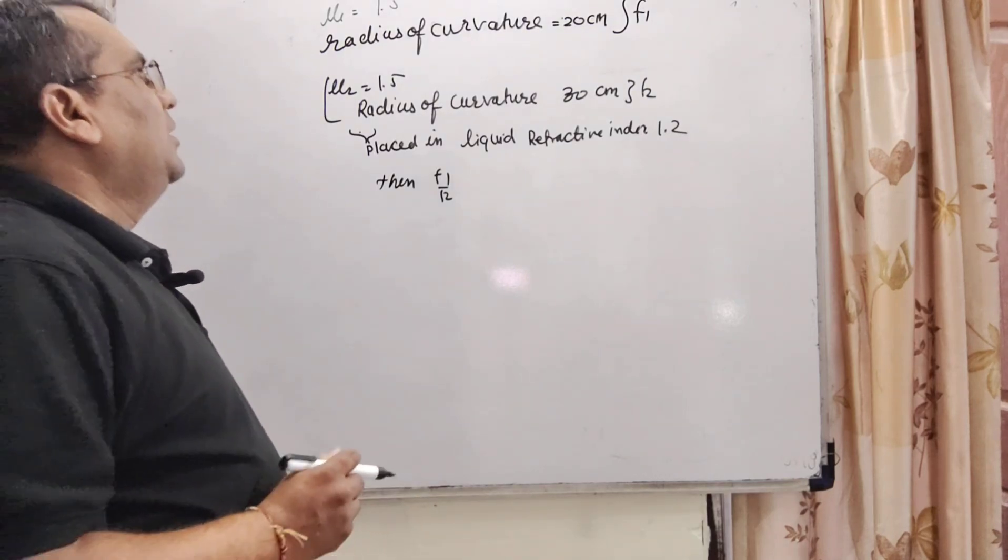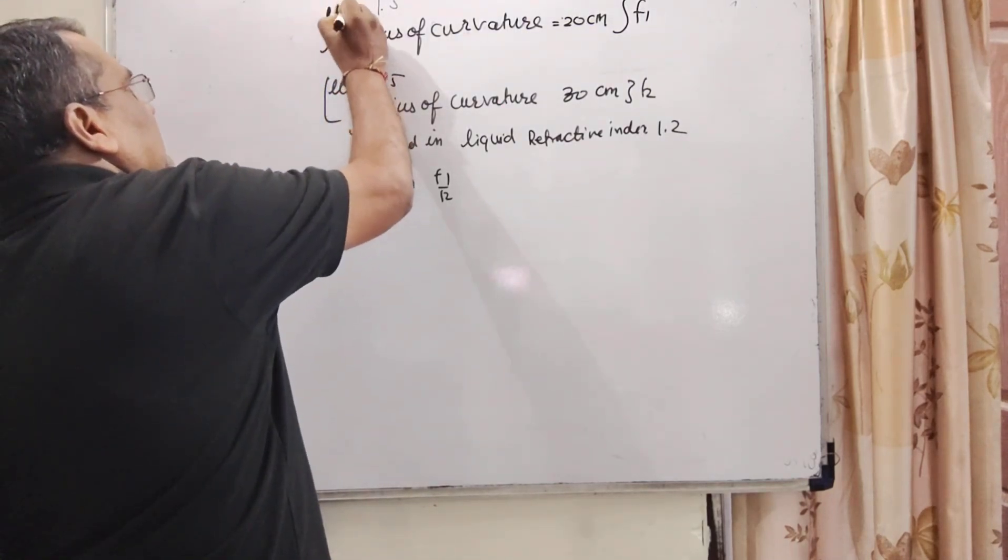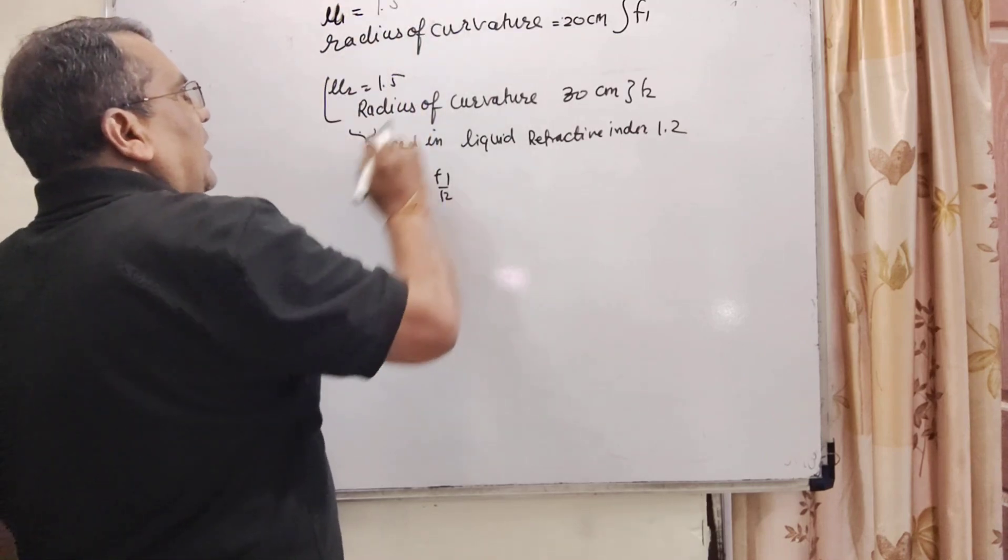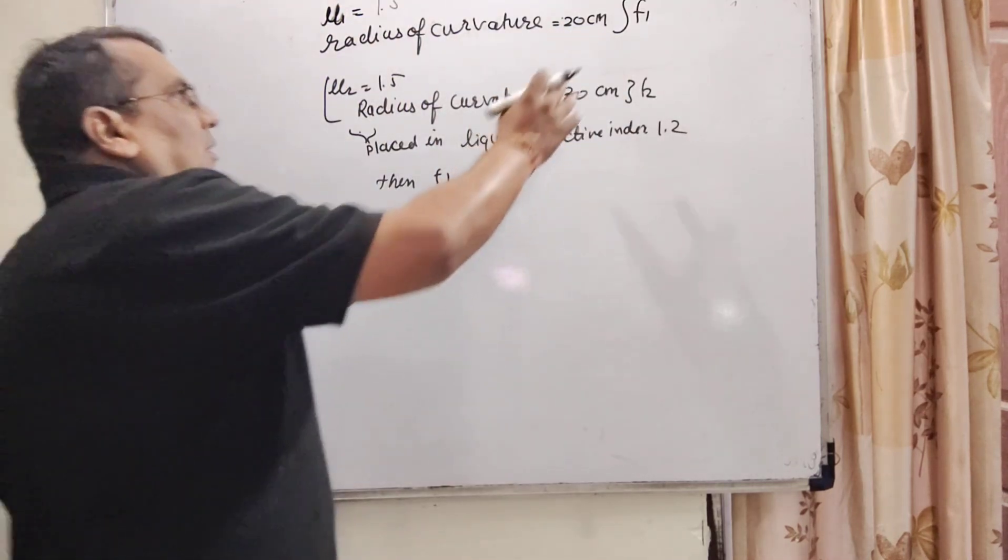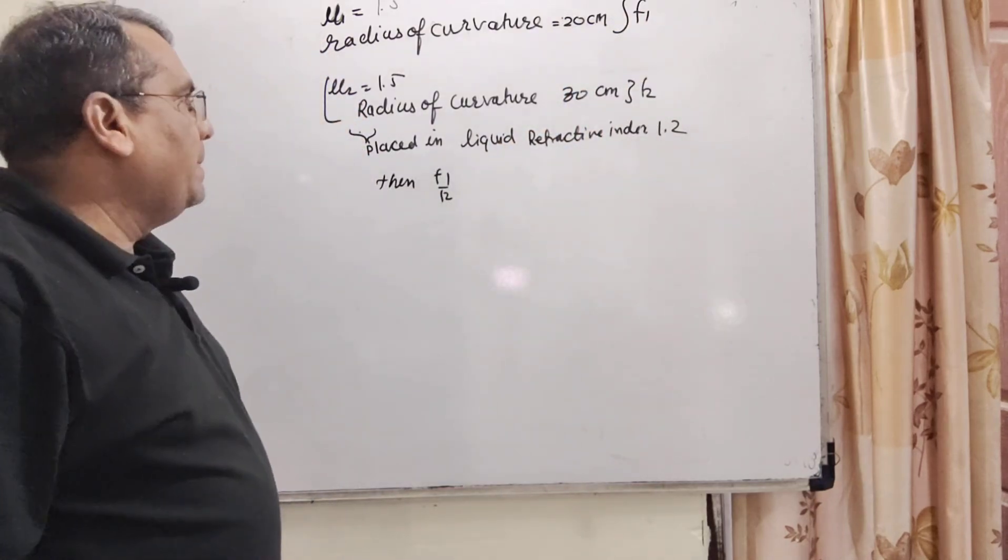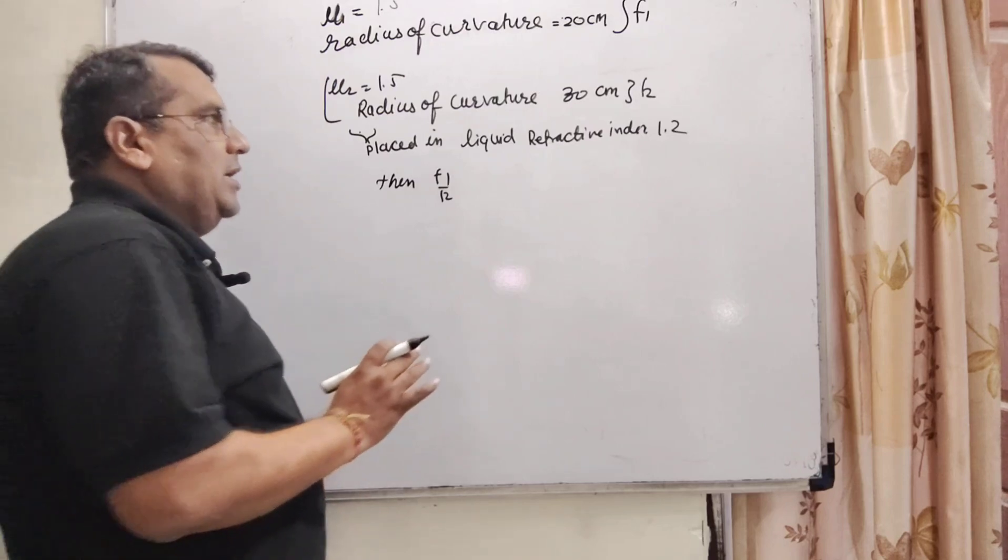Now in this question, we have given plano convex lens which having the refractive index 1.5 and radius of curvature is 20 cm. That is for the first lens f1 consider focal length.